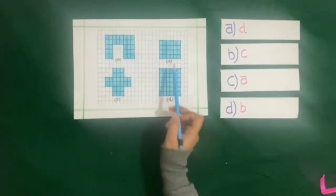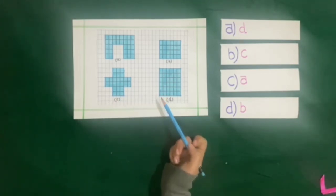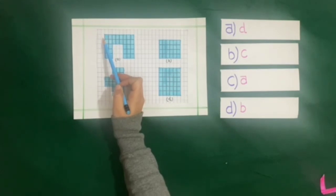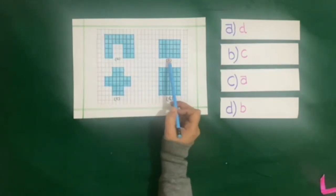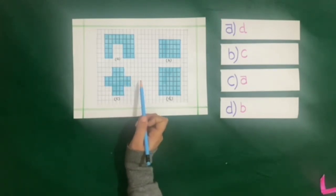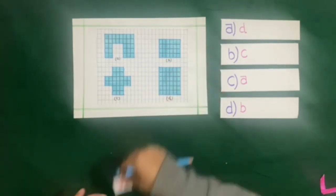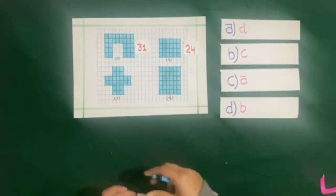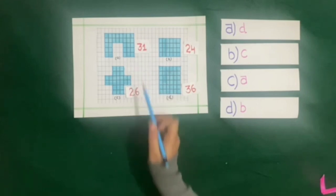Here 4 different figures are given. We have to find the area of every figure and see which figure has the maximum area. To find the area, the length of each side of every small square is 1 cm, so the area of every small square is 1 square cm. We will count the number of squares in every figure. The figure with the maximum number of squares will have the maximum area. The number of squares in figure A are 31, in figure B are 24, and in figure C are 26.